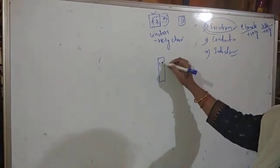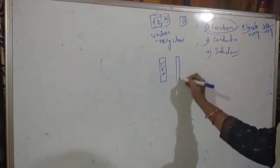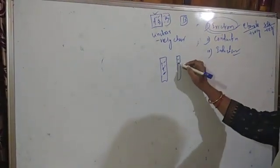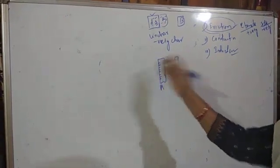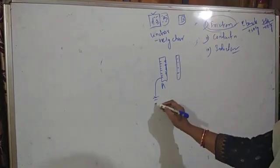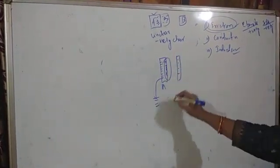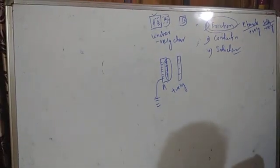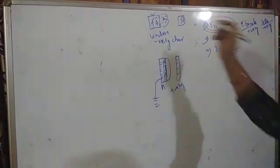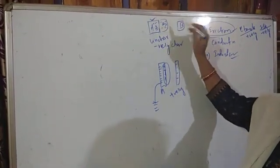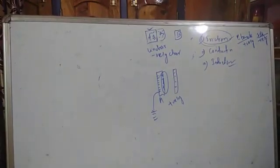In the induction process, we take an uncharged body and bring a charged body near it — either negatively or positively charged. Suppose we bring a negatively charged body near the uncharged body A. Since same charges repel and opposite charges attract, all the positive charges of the uncharged body come near the negatively charged body, and all negative charges move to the far side. If we separate that side, we get the whole body positively charged. So in induction we get a different nature of charge compared to the charging body, whereas in conduction we get the same nature of charge.